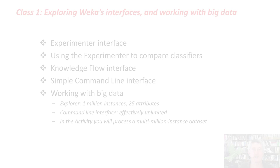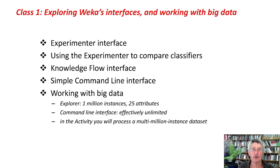This is the first class. It's called Exploring WEKA's Interfaces and Working with Big Data. We're going to look at the Experimenter interface, which is used for comparing classifiers on different data sets. We're going to look at the Knowledge Flow interface and the simple Command Line interface. We're going to talk about big data — the Explorer works with pretty big data, up to maybe a million instances with maybe 25 attributes each. Using the Command Line interface in the right way, you can deal with much larger data sets, effectively unlimited data sets or data streams. In the activity, you'll process a multi-million instance data set — I think with 10 million instances. So it's pretty big stuff.